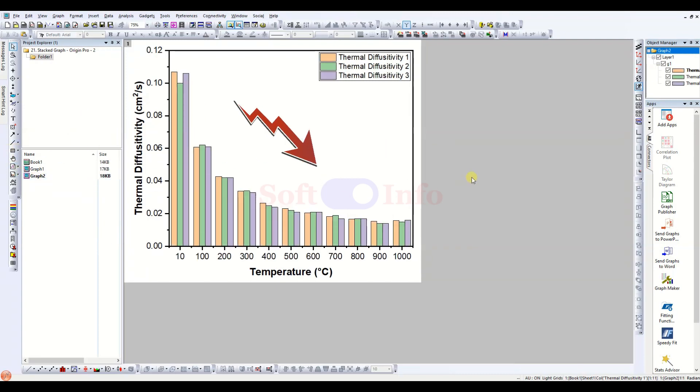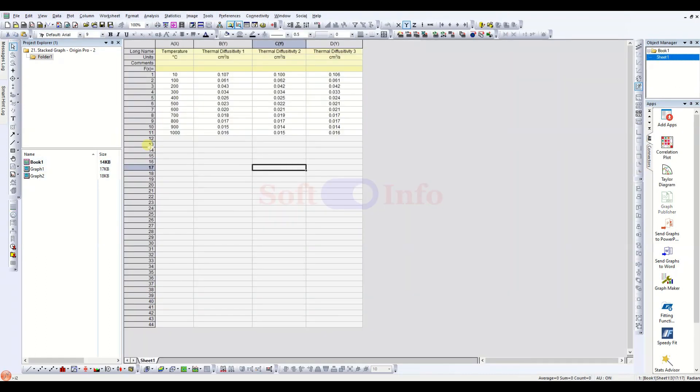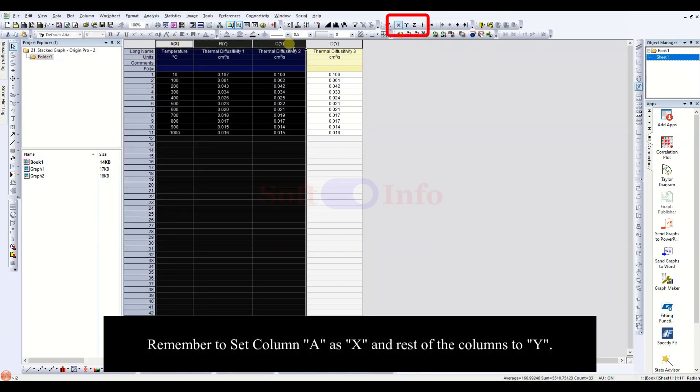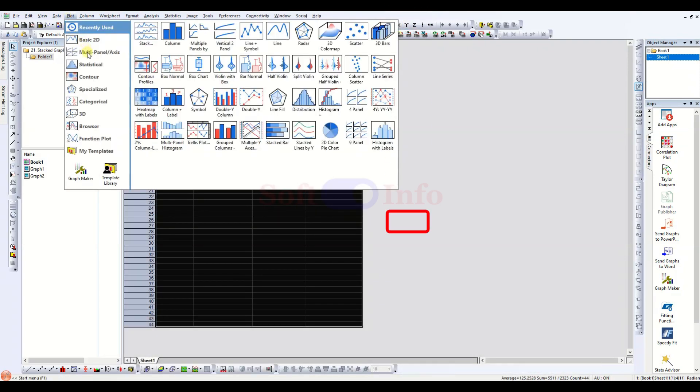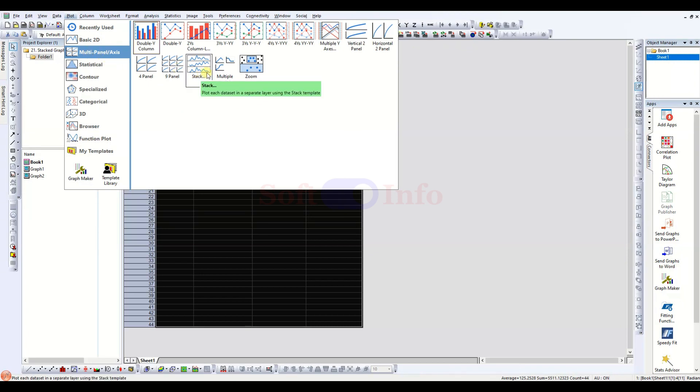So to solve this, let us create a stacked graph. First, select all columns of your data, then go to Plot, choose Multi-Panel Axis, and select Stack. Carefully take a close look at the settings configurations displayed on the screen.